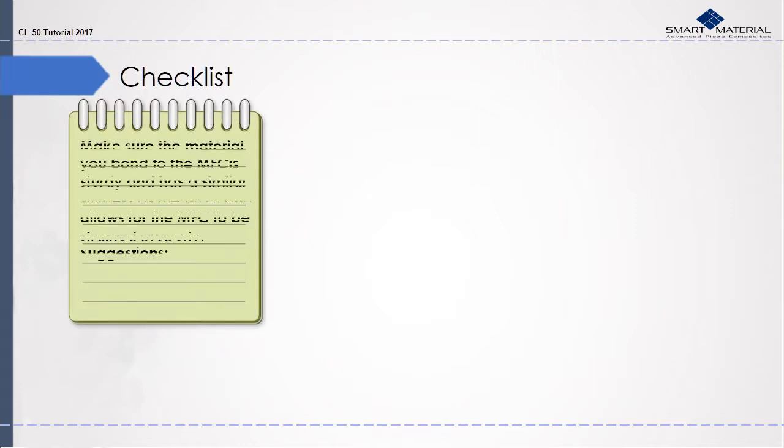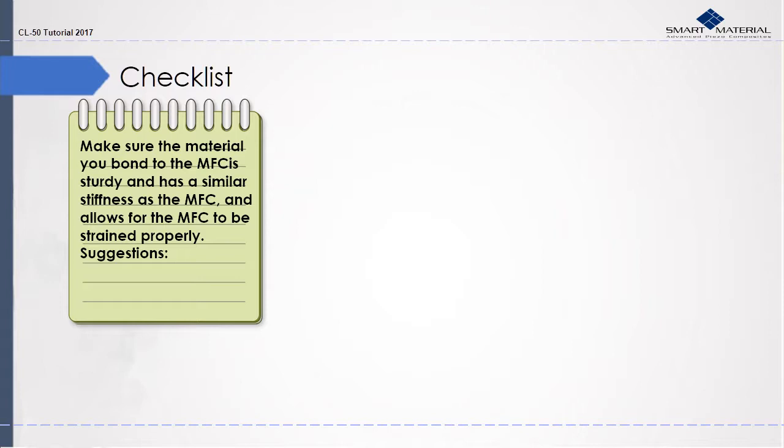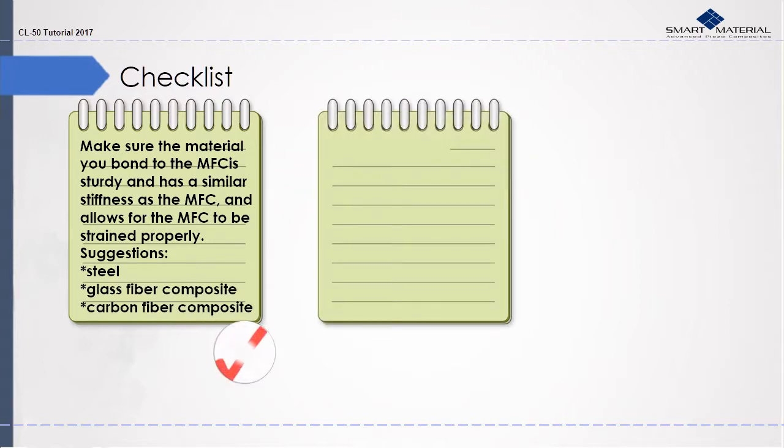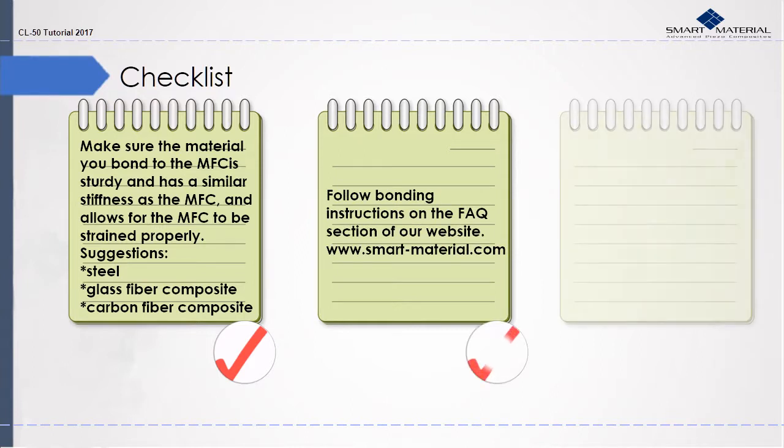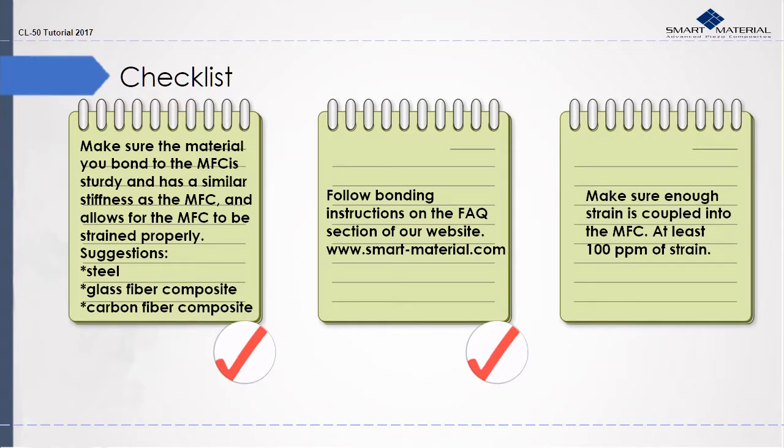Make sure the material you bond to the MFC is sturdy and has a similar stiffness as the MFC and allows for the MFC to be strained properly. Some suggestions are steel, glass fiber composite, and carbon fiber composite. Follow the bonding instructions on the FAQ section of our website. Also, make sure enough strain is coupled into the MFC. Strain should be at least 100 parts per million.